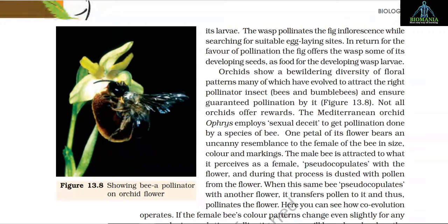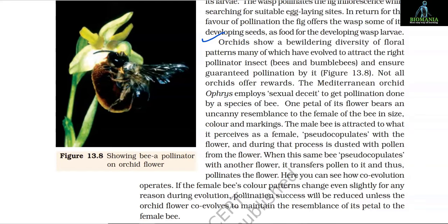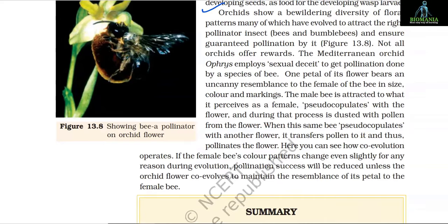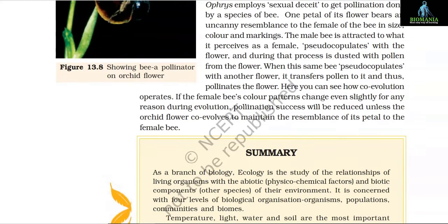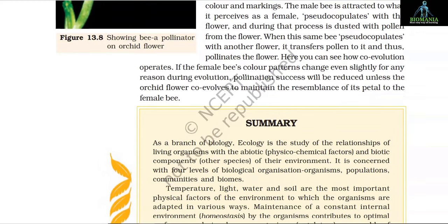Orchids show a bewildering diversity of floral patterns, many of which have evolved to attract the right pollinator insects and ensure guaranteed pollination. The Mediterranean orchid Ophrys employs sexual deceit to get pollination done by a species of bee — one petal of its flower bears an uncanny resemblance to the female of the bee in size, color, and markings. The male bee is attracted to what it perceives as a female, pseudocopulates with the flower, and during that process is dusted with pollen. When this same bee pseudocopulates with another flower, it transfers pollen and pollinates the flower. Here you can see how co-evolution operates: if the female bee's color patterns change even slightly during evolution, pollination success will be reduced unless the orchid flower co-evolves to maintain the resemblance of its petal to the female bee.